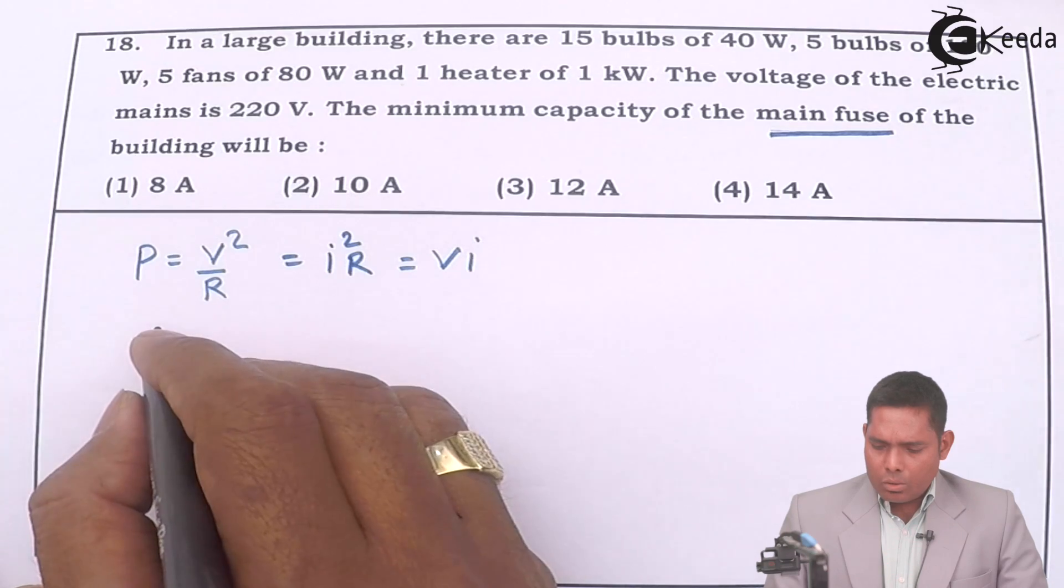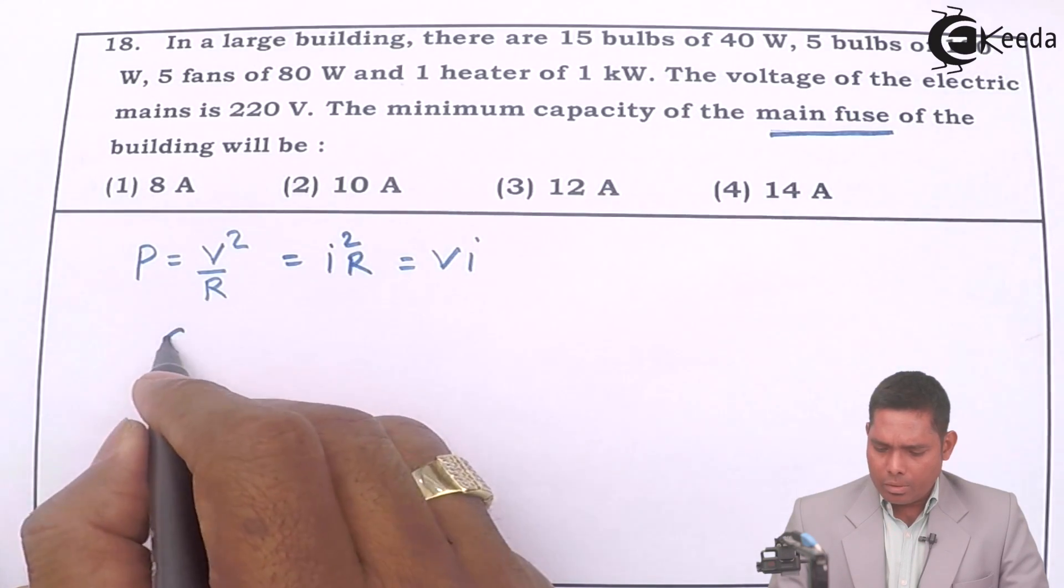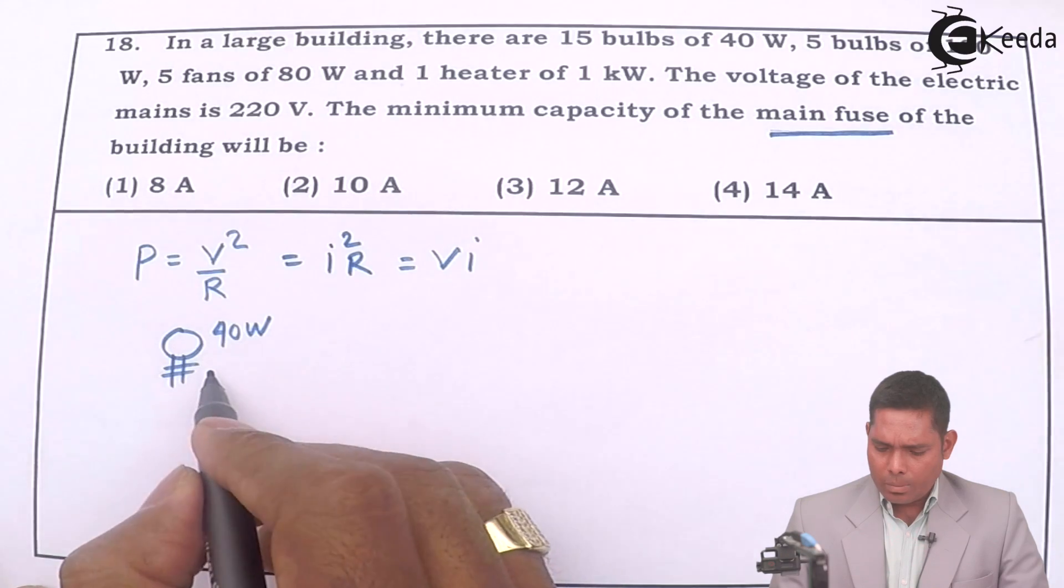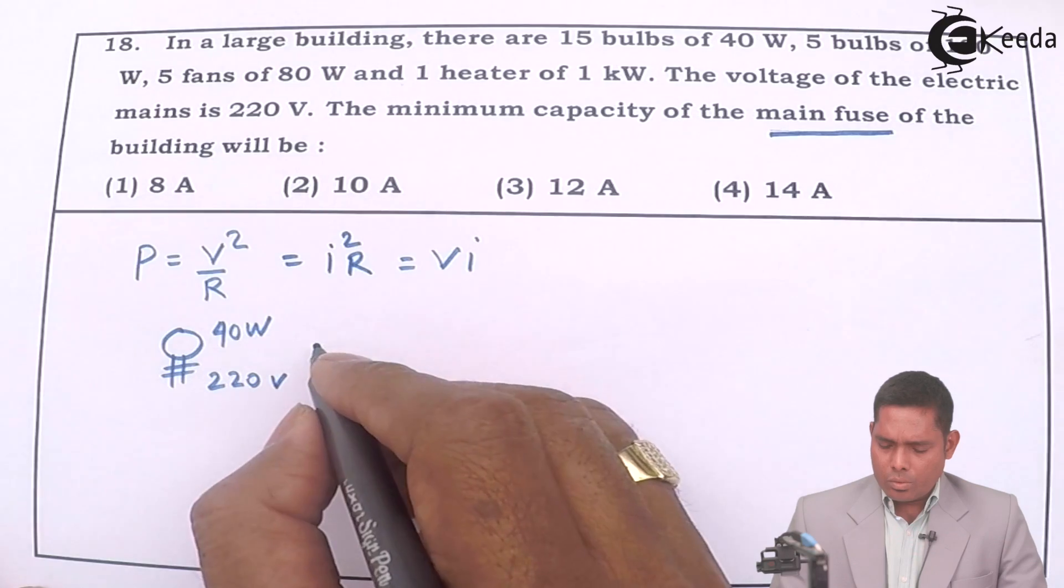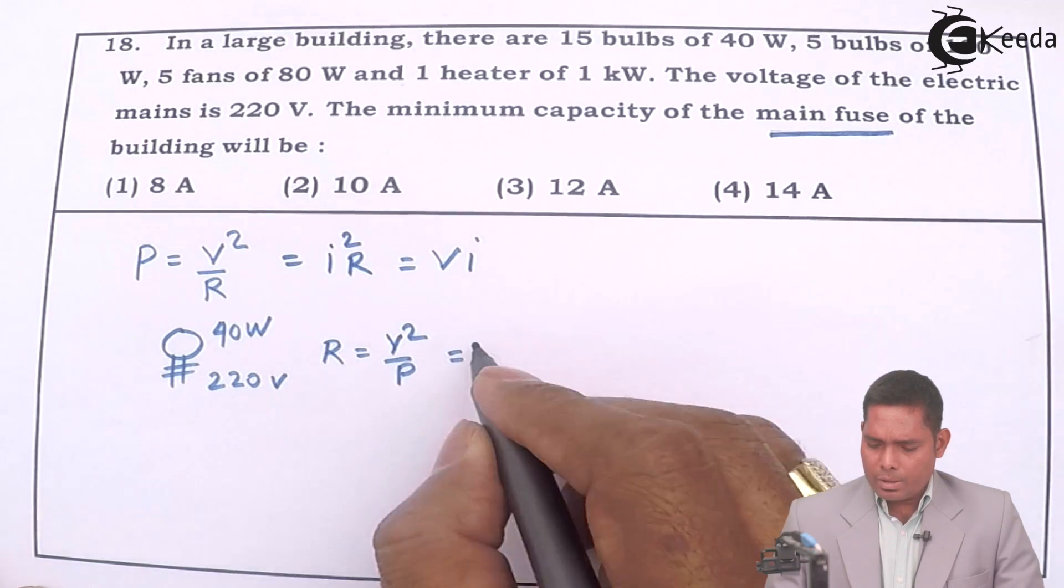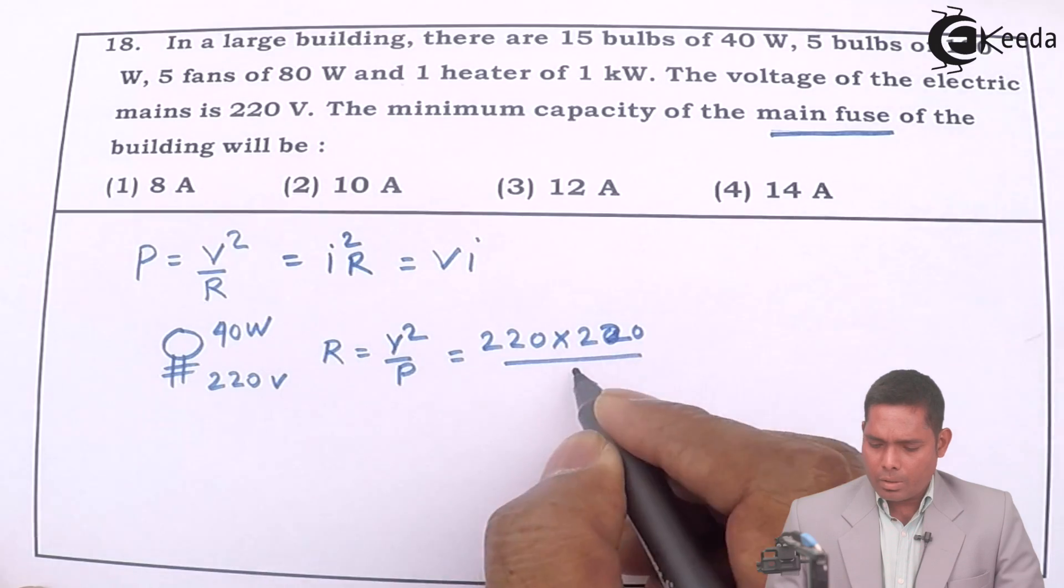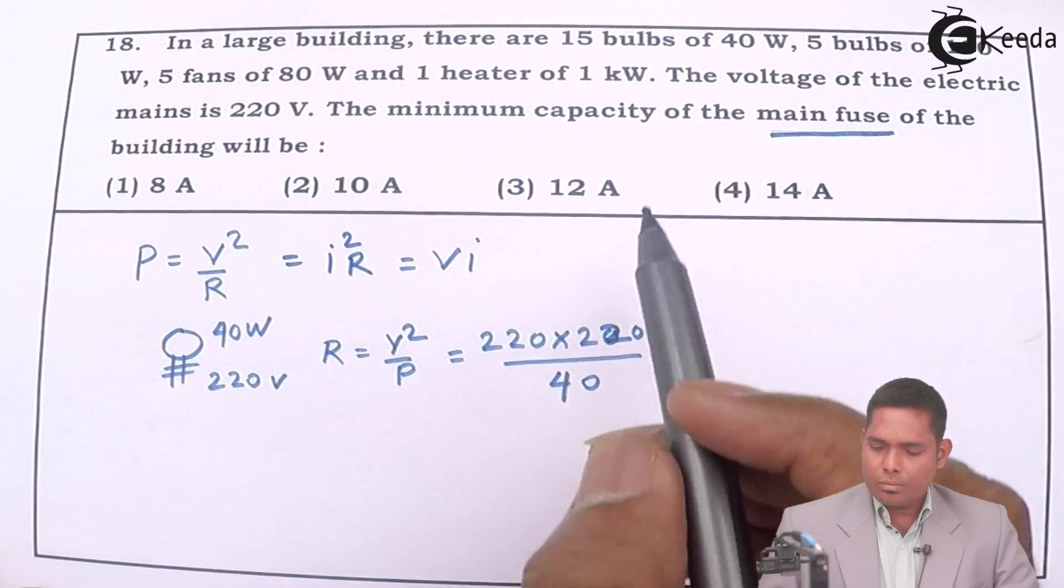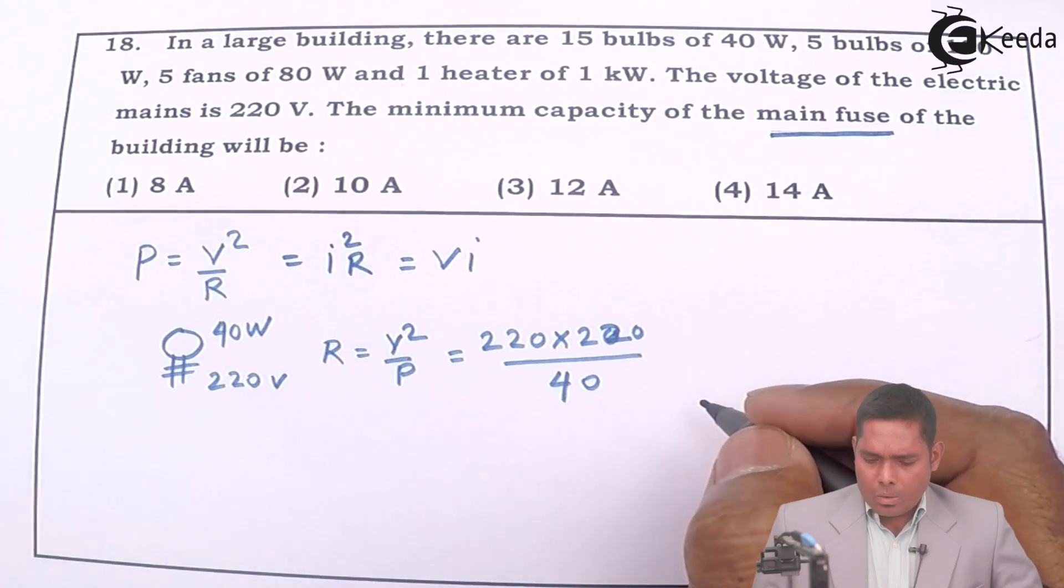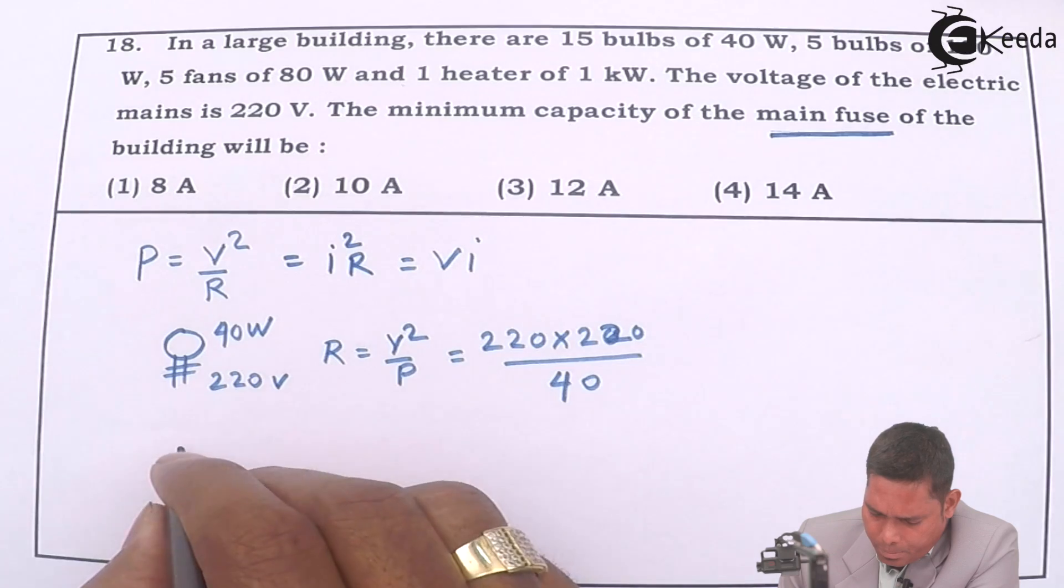To find the resistance of each bulb - because the rating of a bulb, if you think of a bulb, the rating is 40 Watt and the supply is 220 Volt. So the resistance is found by resistance equals V square by the power. The voltage supply is 220, so 220 times 220 divided by power is 40 Watt. This is the resistance of the single bulb. Similarly, we have to find the resistance of each of the elements.